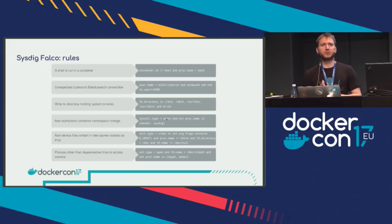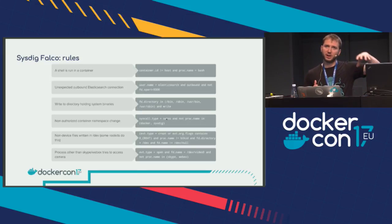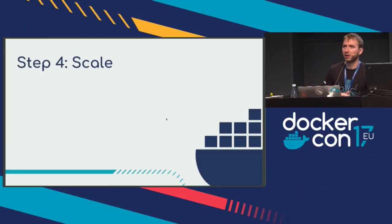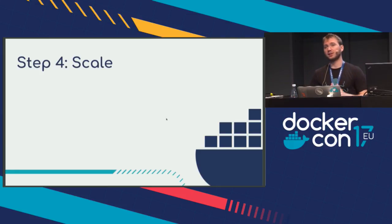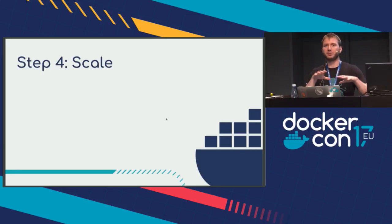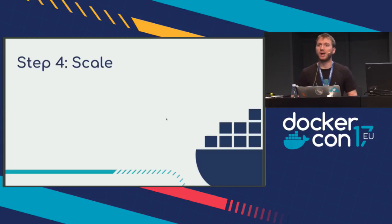Overall, Falco is really cool. Now we have three blocks: observability, a way to identify services, and a way to alert on bad behavior. The fourth thing we did for our runtime container security — and everything I just showed is completely open source — is to make it scale. How do we combine all these building blocks into a product that actually works well with thousands of hosts and hundreds of thousands of containers?